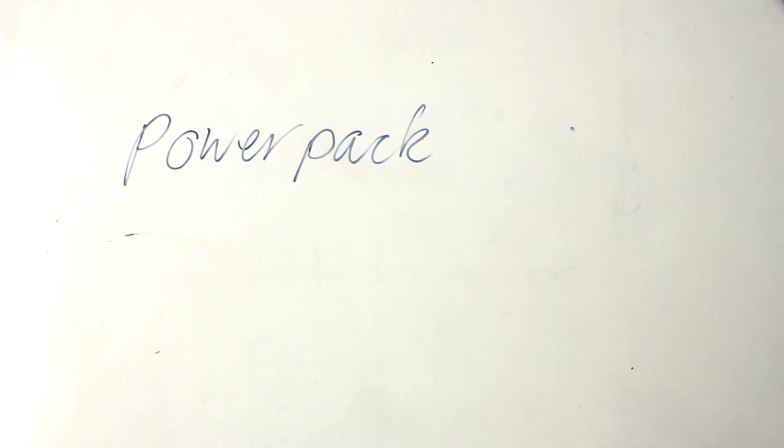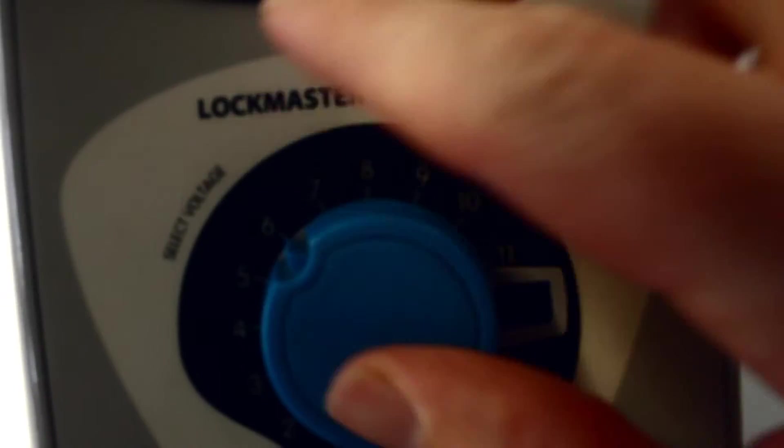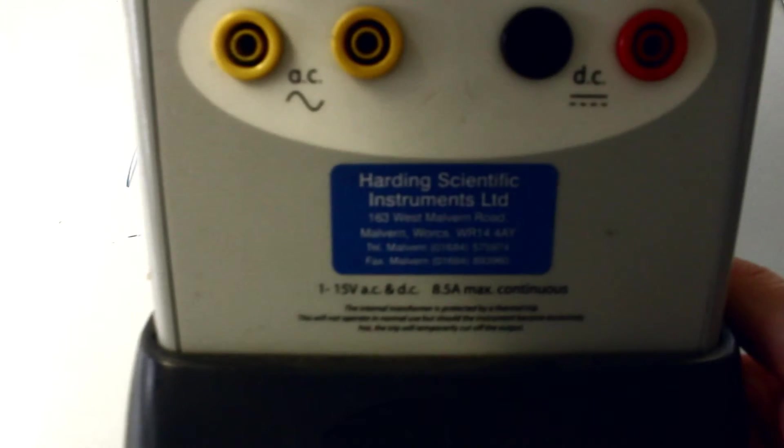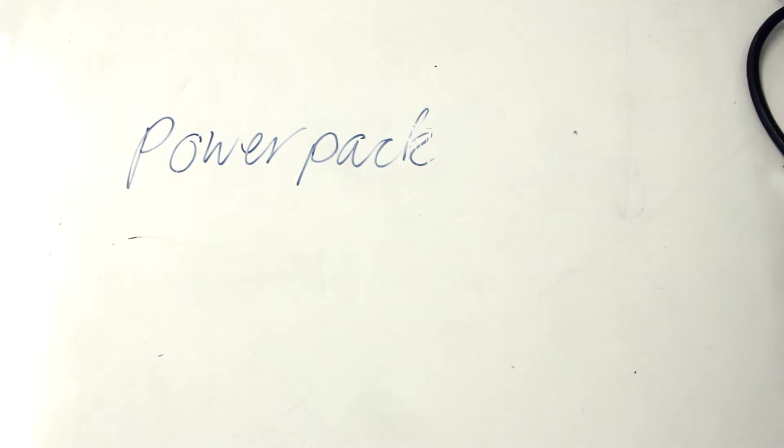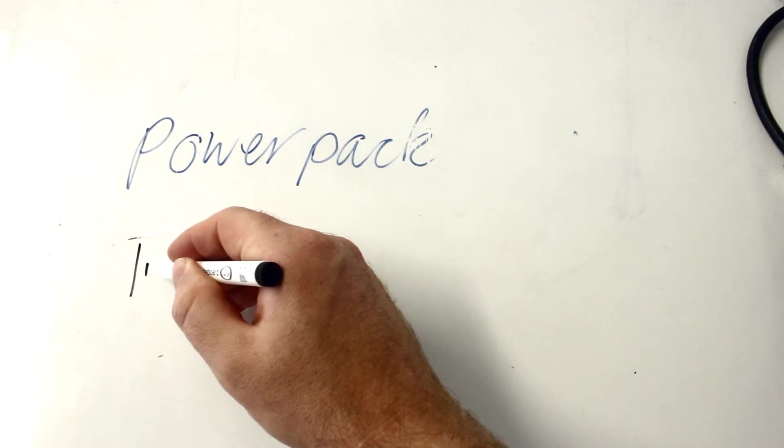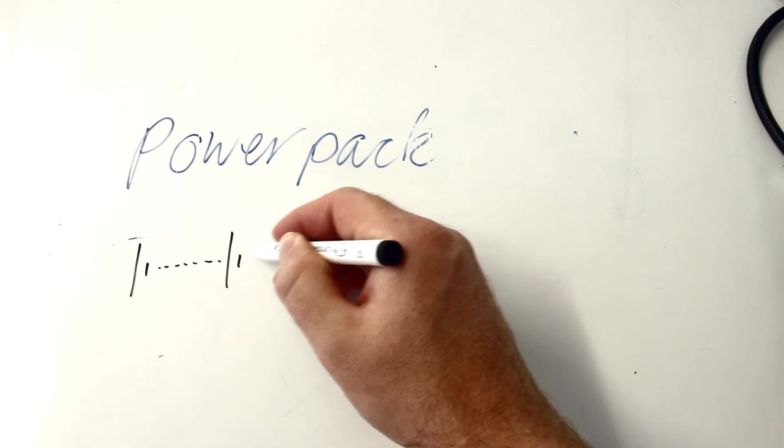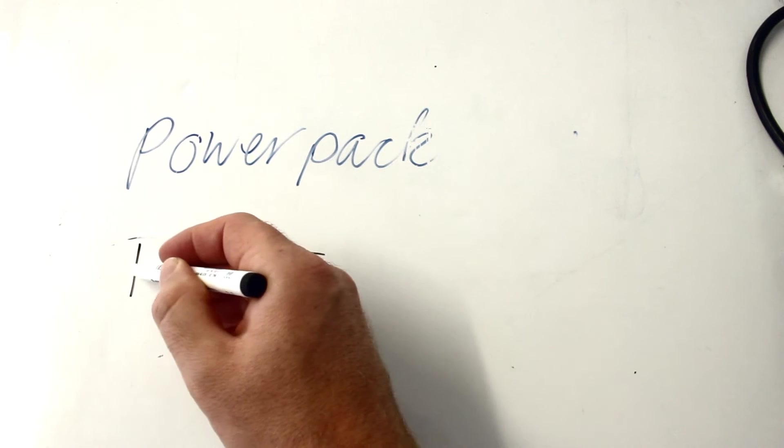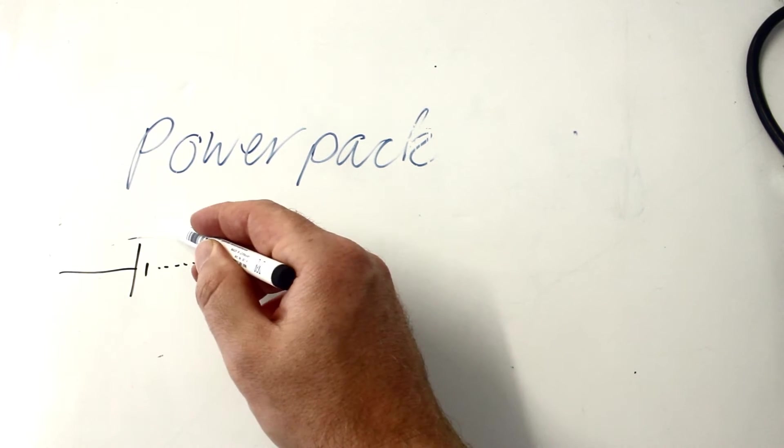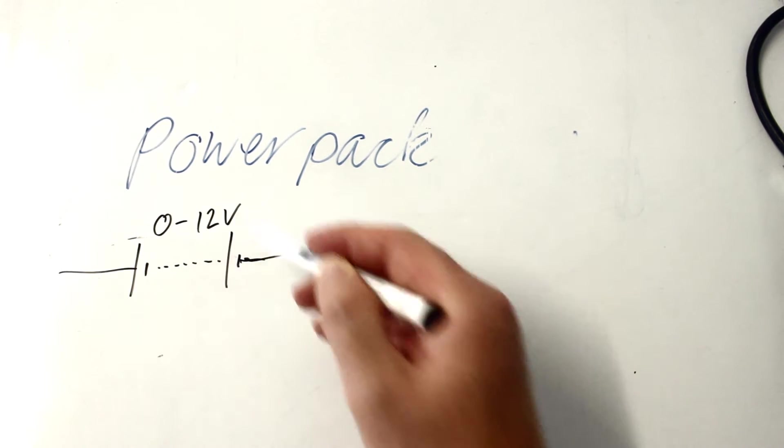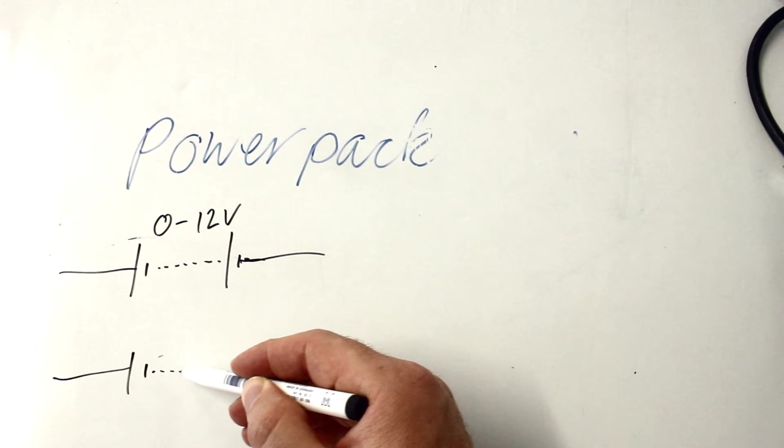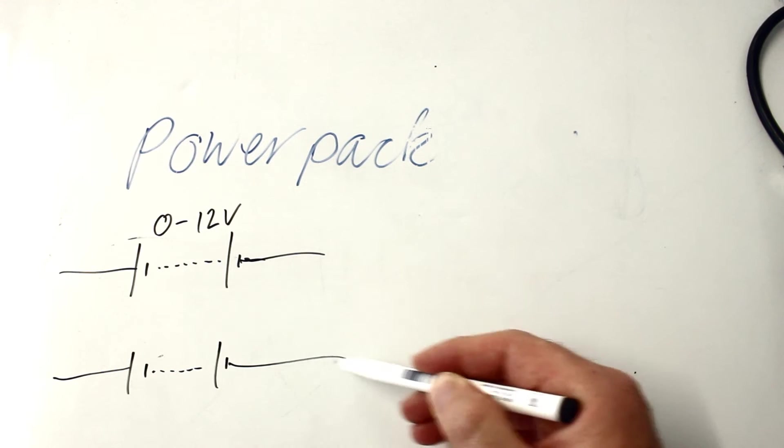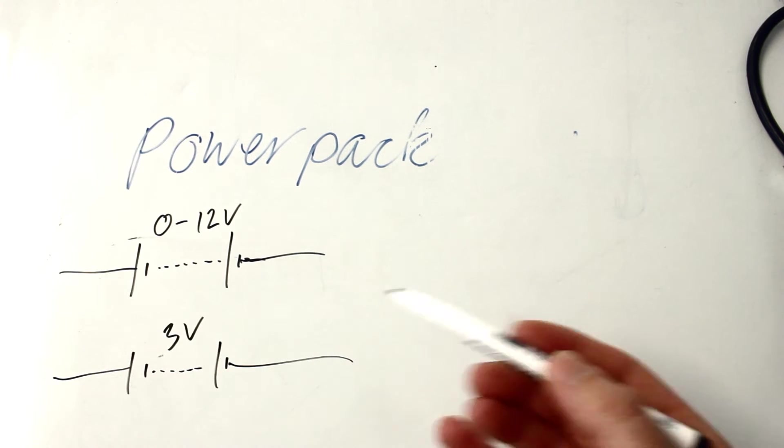So power packs, that's one of these. You've probably seen it. Variable power supply. It's got an AC and a DC side. They're drawn just like this. Positive side. Negative side. And often we would put on what the range is, if that was applicable. Or if you actually wanted to have a power pack that was definitely set at a certain voltage, then you'd write it on like that.